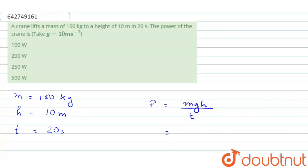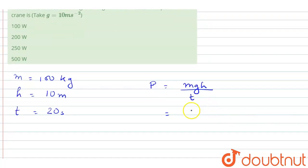Just substitute the value. So m is 100 into g, 10 meter per second square into h is 10 by t is 20 seconds.